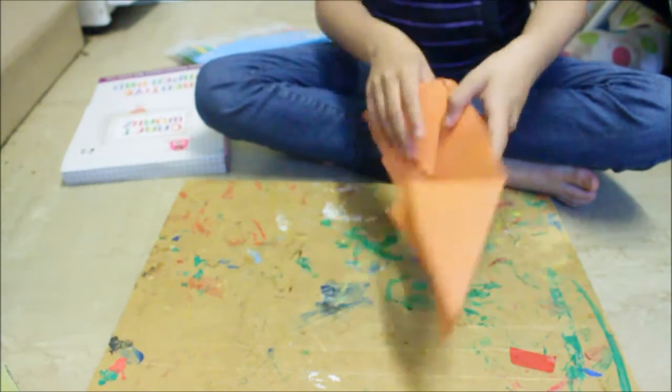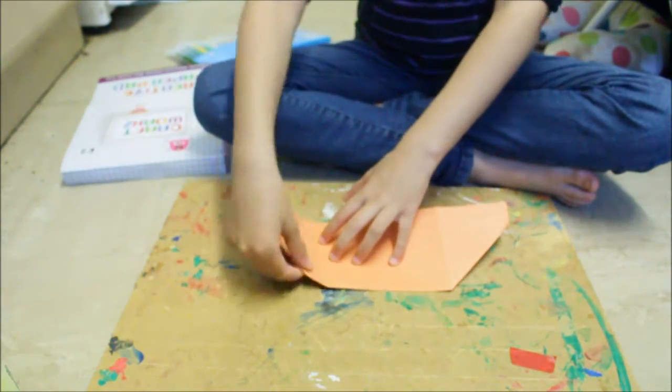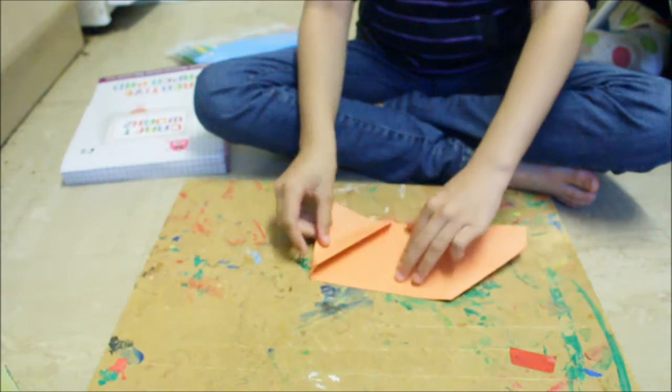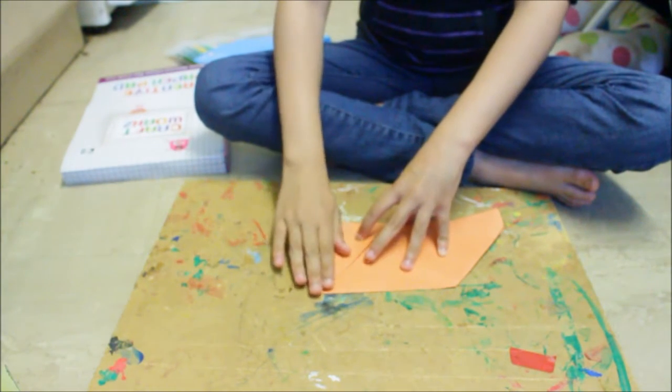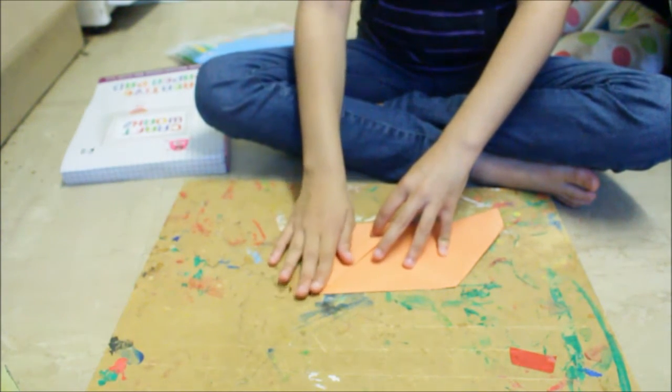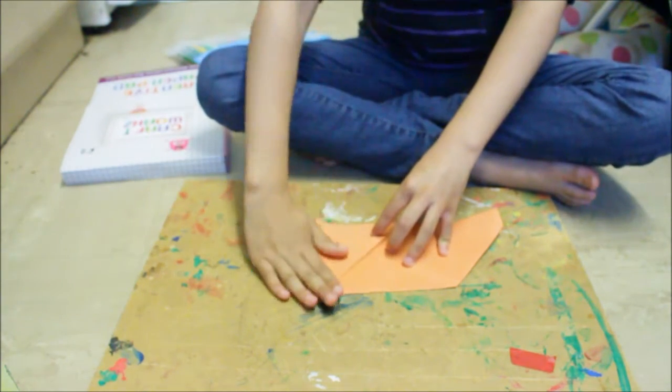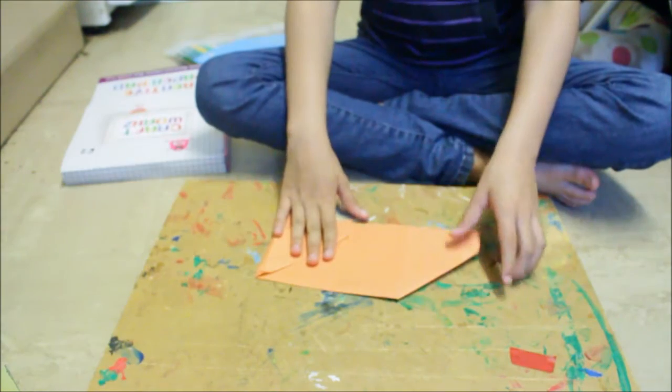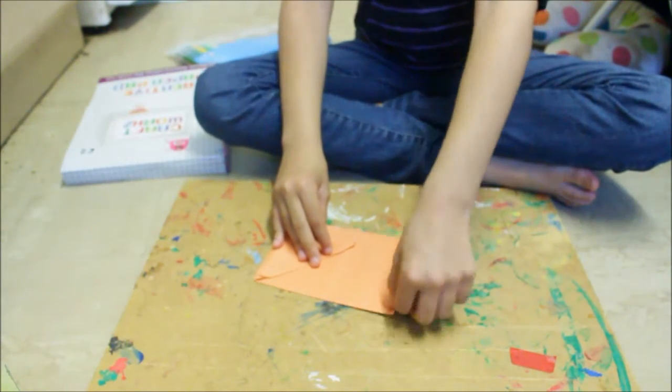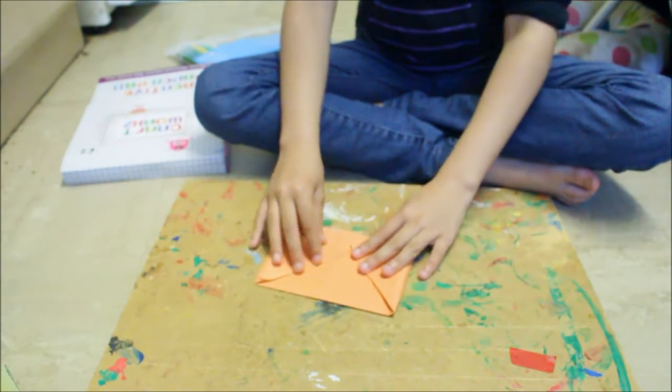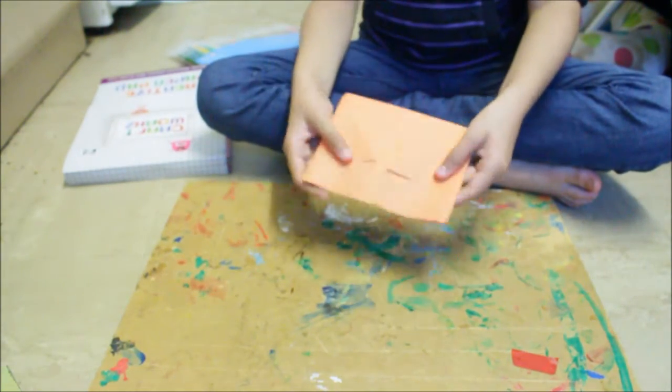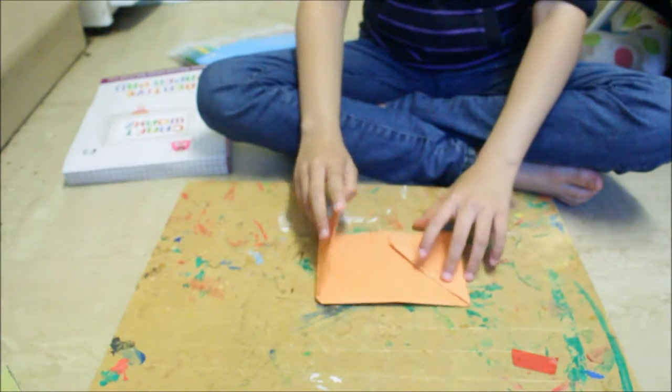Then you turn it around and then with the half of the bungalow you fold it into the crease. Then you do the same with the other one and it's the same on both sides.